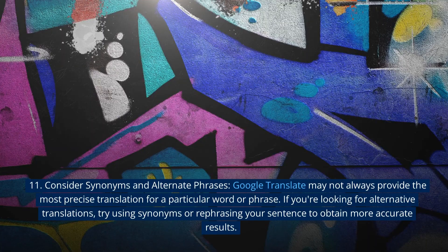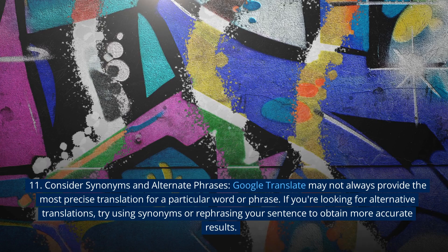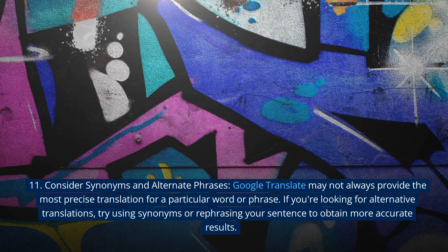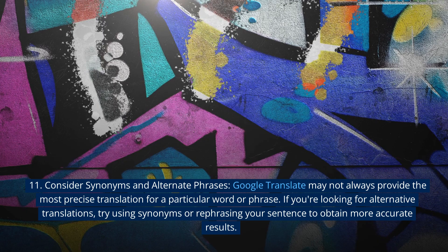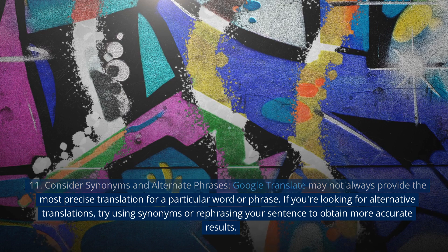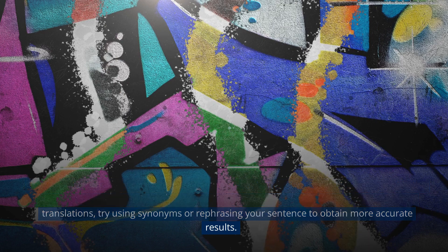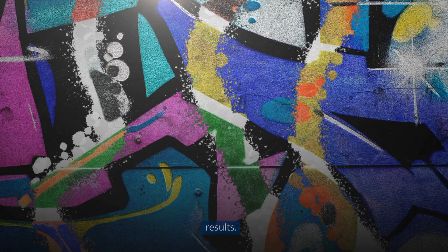11. Consider synonyms and alternate phrases. Google Translate may not always provide the most precise translation for a particular word or phrase. If you're looking for alternative translations, try using synonyms or rephrasing your sentence to obtain more accurate results.